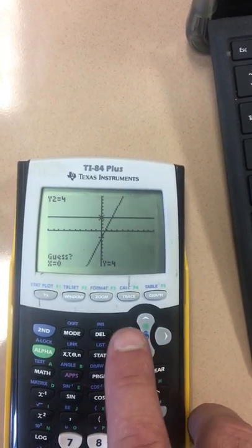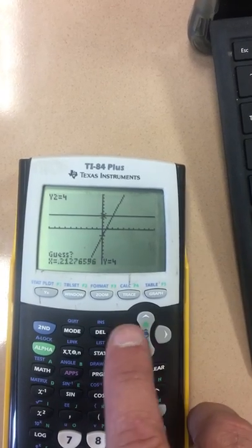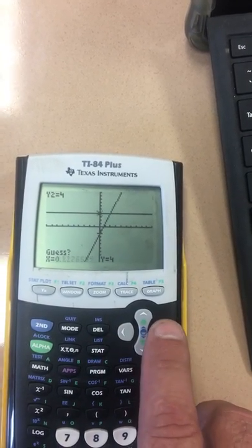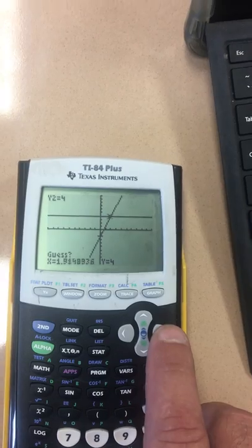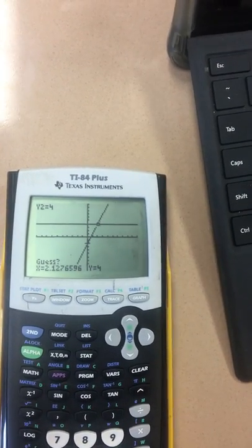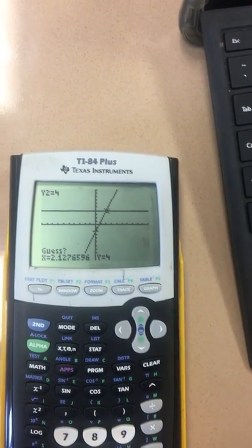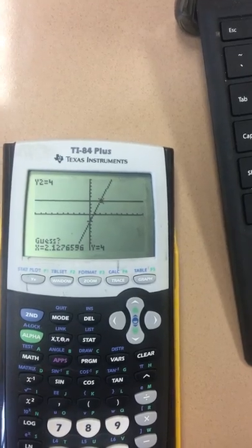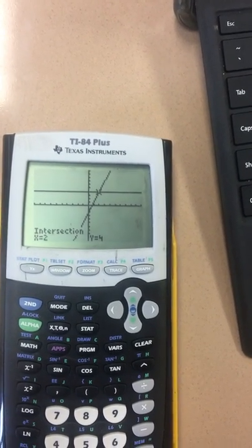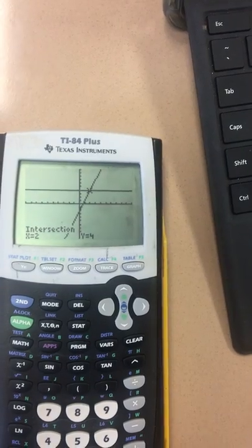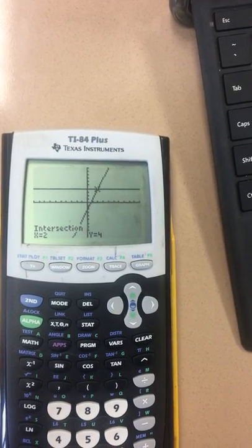Now it's asking for a guess. For the guess, you have to use the right and left to toggle. The up and down won't help you. Put it fairly close to where you believe it intersects. Notice that guess says 2.12. When I hit enter, it tells me the intersection (2, 4). x = 2.